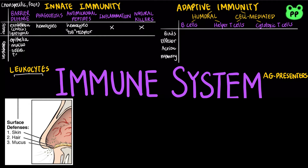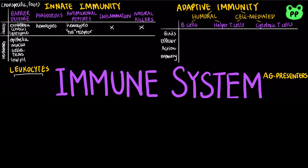mucus, and tears that are hostile to microbes, and the low pH in our digestive system. Vertebrates have several different phagocytic cells including neutrophils, eosinophils, macrophages, and dendritic cells.